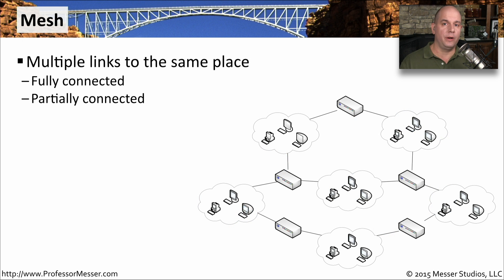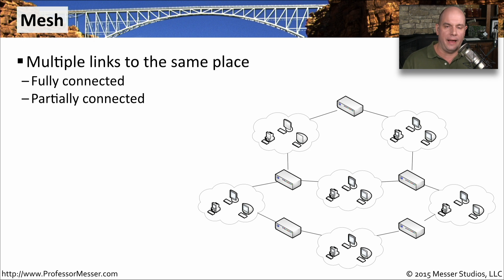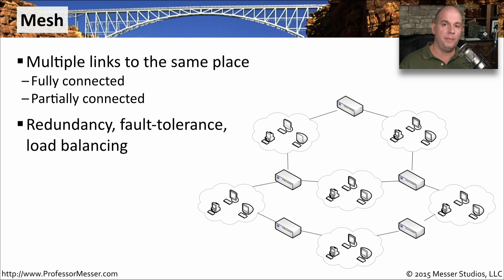When we refer to a network that has a mesh, it's one that has one or more connections to multiple sites. This may be a fully meshed network where every site is connected to every other site. But generally, we have partially meshed networks so that some sites have multiple connections to other sites, but perhaps not to every other location. This is a good topology if you're worried about uptime because you have redundancy — if you lose one link to a site, you can simply use the other link, and the data can still reach where it needs to go.